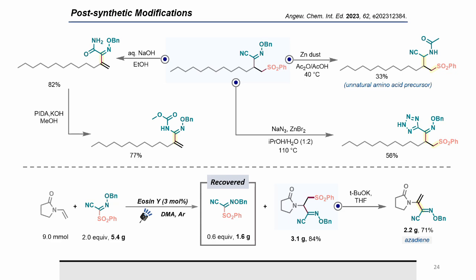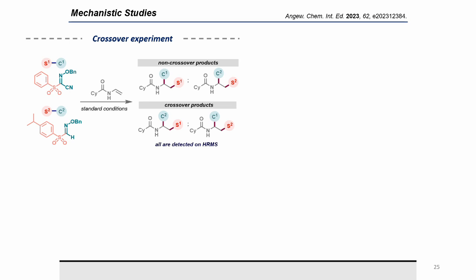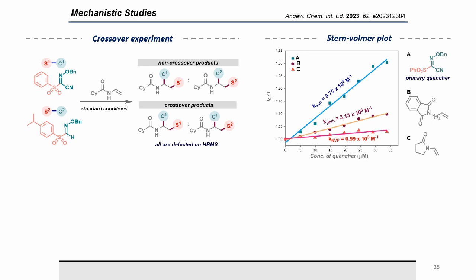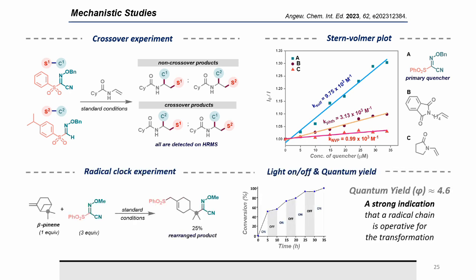To gain insight into the reaction mechanism, we performed several mechanistic studies. A crossover experiment using an enamide with two different sulfonyl oxymethers yielded a mixture of both crossover and non-crossover products, suggesting the reaction is largely out of the solvent cage. A Stern-Volmer plot showed that sulfonyl oxymethar is the primary quencher of the excited photocatalyst, indicating the excited photocatalyst primarily interacts with sulfonyl oxymethar. A radical clock experiment with beta-pinene gave the rearranged product, indicating a radical pathway.